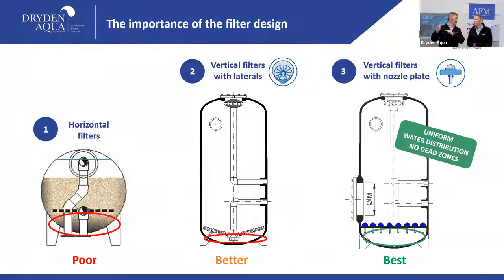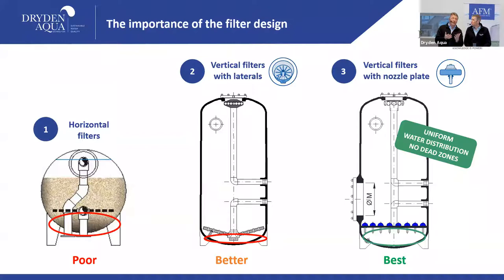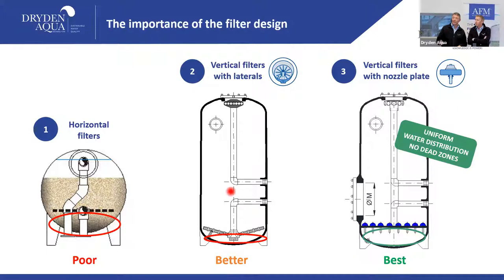Nozzle plates are required whenever you do an air wash, which is used with sand filters to rub off biofilm at 60–90 m/hr. With AFM you don't need this since there's no biofilm. If you use air wash with laterals, all the air exits in the first five centimeters — you just disturb the filter bed and make a mess. Never use air wash with laterals. Nozzle plates also ensure equal water distribution during both filtration and backwash.